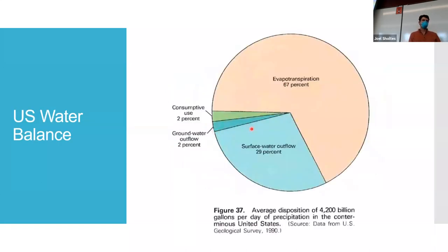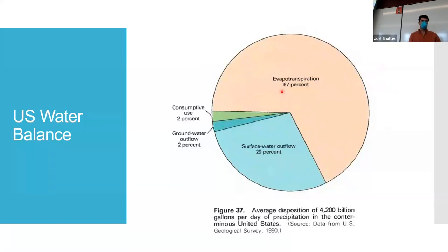Here's a look at what happens to the 4.2 trillion gallons of water that falls over the US on an average year. Of that precipitation, 67% evapotranspires. That's a lot. We consume only 2%.